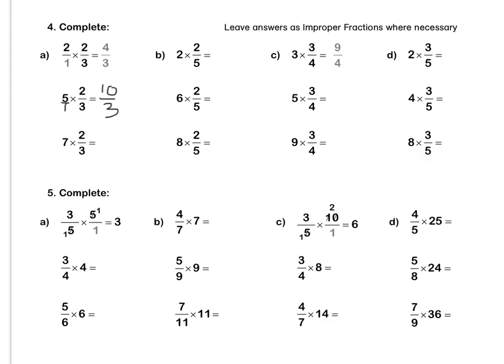Question C: we have 3 times three quarters. We can put 3 over 1. We can't simplify anywhere, so we multiply out. Let's do this sum together: 2 over 1. We can't simplify anywhere, so we multiply out to get 6 over 5. Press pause to complete questions C and D by yourself.